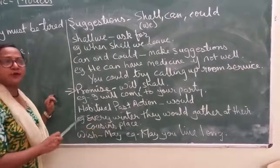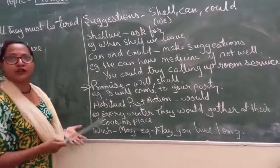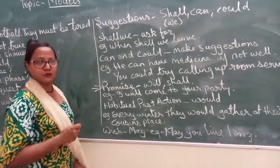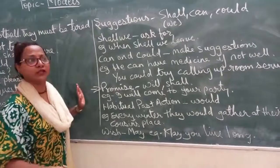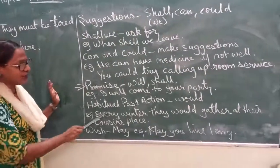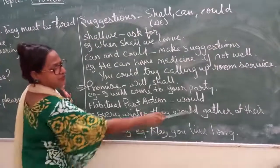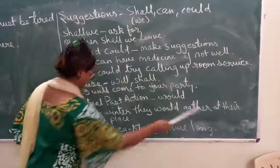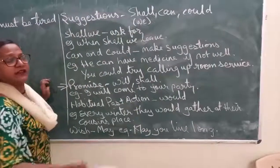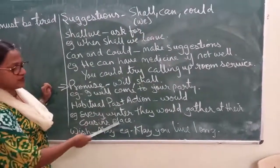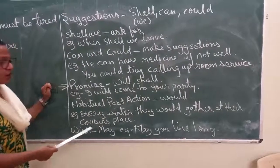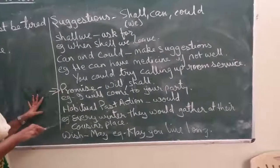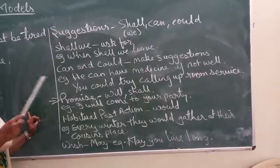Now, habitual past actions. Habitual means when you are in the habit of doing things, like brushing your teeth — you do it in the past, you are doing it in the present, and you will continue in the future. For habitual past we use would — for example, 'Every winter they would gather at their cousin's place', meaning it was their habit every winter to go to their cousin's house. Another example: 'Every winter we go to Shimla.'